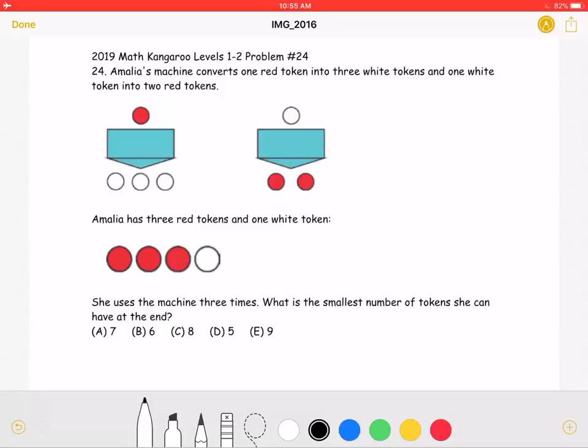Amalia's machine converts one red token into three white tokens, and one white token into two red tokens. Amalia has three red tokens and one white token. She uses the machine three times.